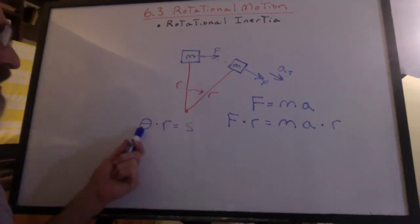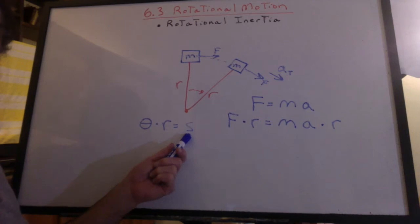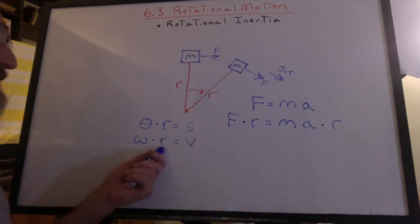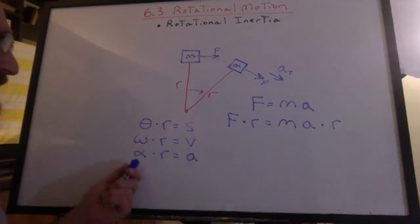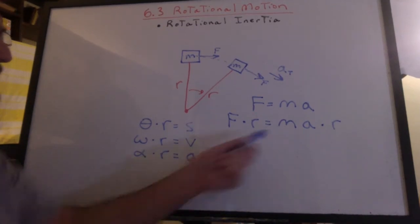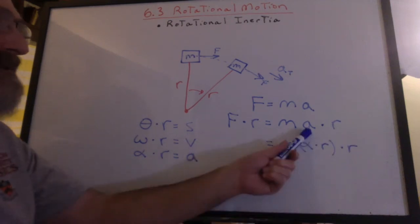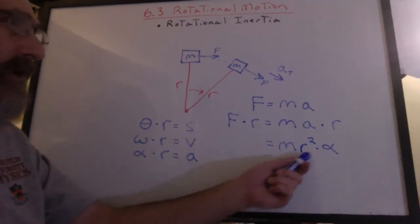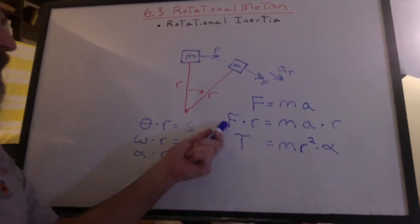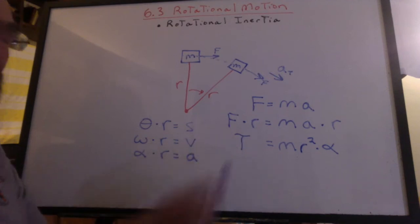Let's talk conversions. Theta times r would be arc length. Omega times r is the velocity tangential. And alpha times r is the acceleration tangential. We'll now apply it to this formula. We can replace a with alpha times r. Rearrange a little and we have mr squared alpha. And of course force times the radius is the torque.